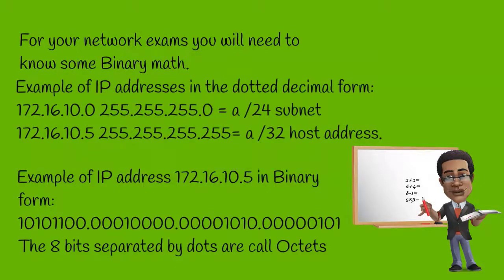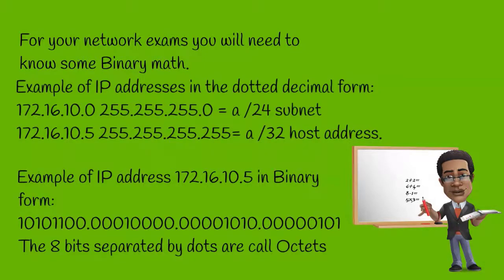That is what the computer actually sees, and it comes in 8 bits separated by dots, which are called octets. Once you understand binary math, don't be afraid — I was able to grasp it after sitting down with a book and a piece of paper and going through the material. We're going to get into that, but right now we're focusing on the dotted decimal form, which is 172.16.10.0 with a subnet mask of 255.255.255.0. I'm going to explain exactly what that subnet mask means in a moment.